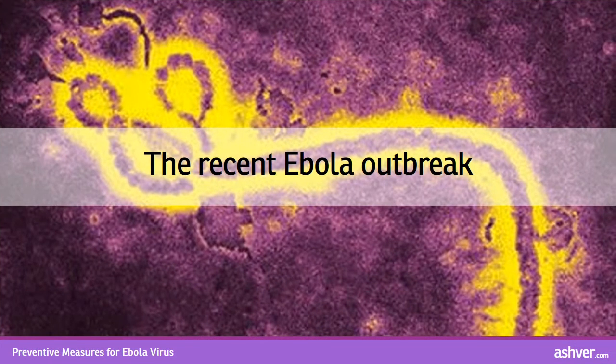The recent Ebola outbreak: Since February of this year, Ebola virus disease cases have been appearing simultaneously in three different countries of West Africa — Sierra Leone (Freetown), Liberia (Monrovia), Guinea (Conakry) — and now in Nigeria also. The epidemic had already reached its peak in Sierra Leone, where cases are now on a decline.